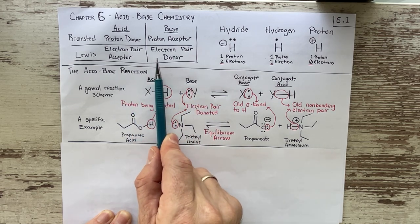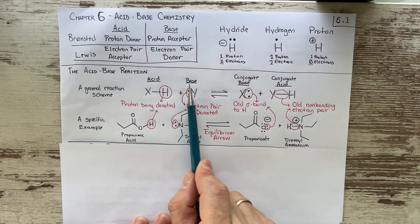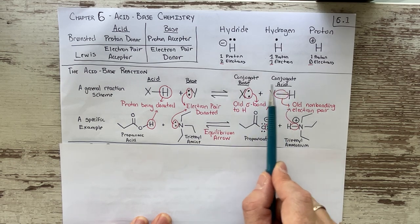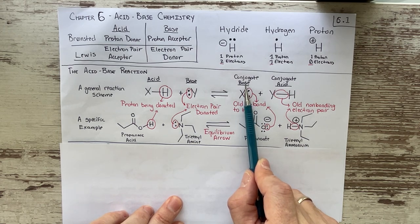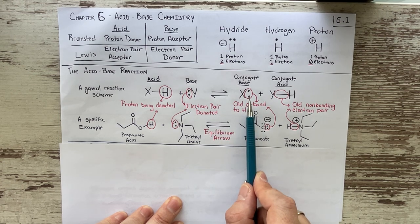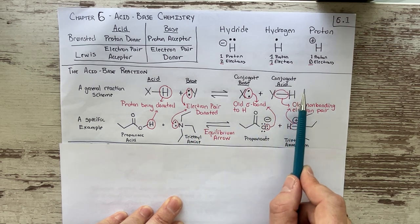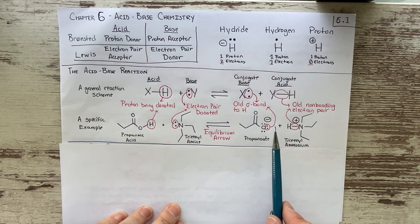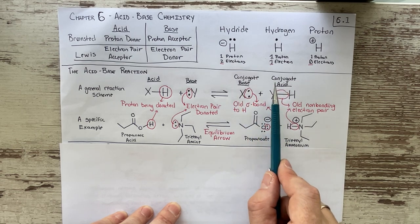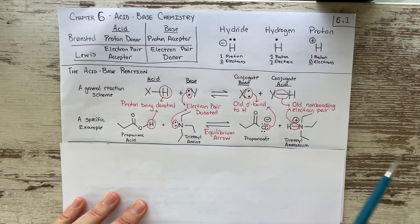Whenever we draw an acid-base scheme, the two molecules on the left-hand side — the reactant side — we call the acid and the base. The two molecules on the product side are still an acid and a base, but we refer to them as the conjugate base and the conjugate acid. This has nothing to do with the equilibrium; it's always the two molecules on the right that we refer to as conjugate acid and conjugate base.